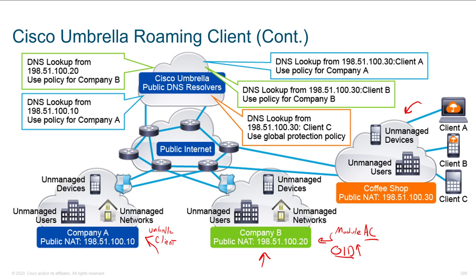If somebody doesn't have that unique agent installed and we don't know where they're coming from, we can still protect them, but we just use what's called a global protection policy. The threat intelligence is constantly updated and we know where hostile things are, but we can't apply a company-specific policy because we don't really know who you are. So use the Roaming Client or the AnyConnect plugin to get the most out of your Cisco Umbrella installation.